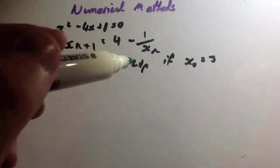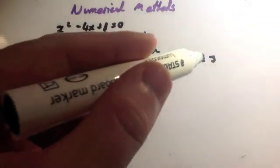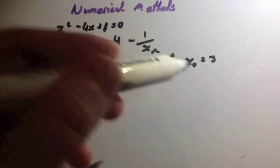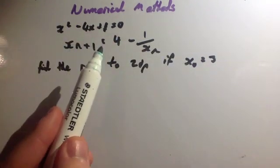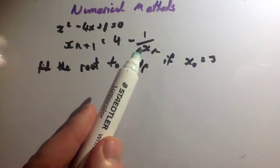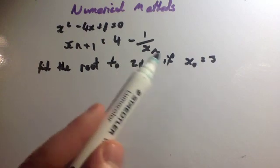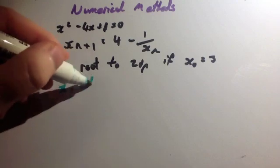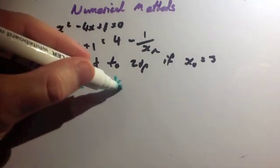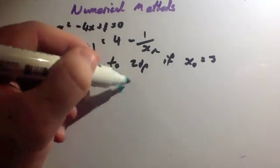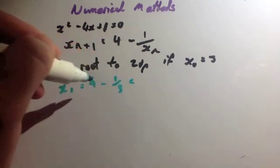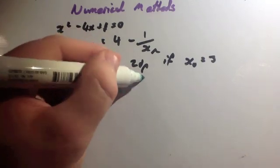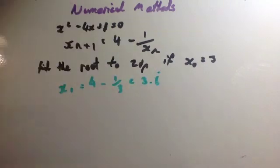Then I would say, find the roots to two decimal places if x0 equals 3. So what you would do is, you'd notice here x1 equals 4 minus 1 over x0. You'd put in your 3 here to get x1 equals 4 minus 1 over 3. That obviously would be a third of 4 would be 3 and two thirds, which would be 3.6 recurring.